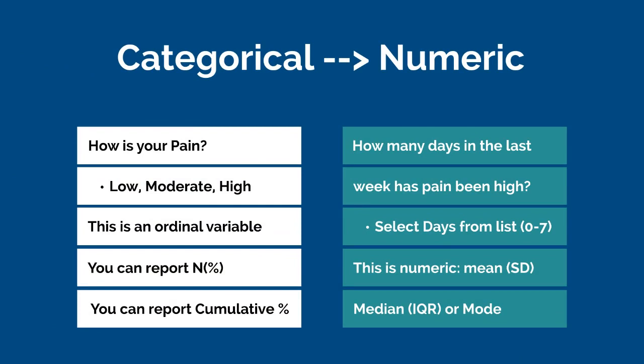Here are some more examples. If you're asking someone about their pain level as low, moderate, or high, that is an ordinal variable. You can report an N and a percent, and you could also report a cumulative percent. If you ask 'how many days in the last week has your pain been high?' and have someone select or write in a number from 0 to 7 — or even 2.5 — that is a numeric variable. You can calculate a mean and standard deviation, a median and IQR, or a median with minimum and maximum, or capture the mode, which is the most frequent response.